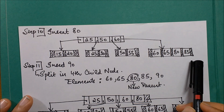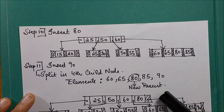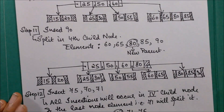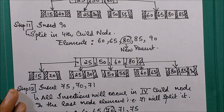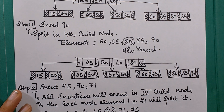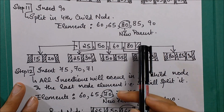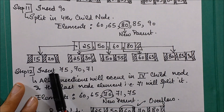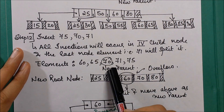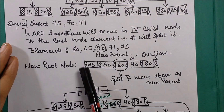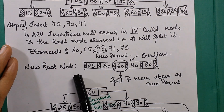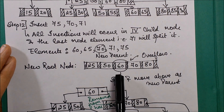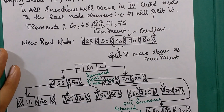Next we insert 80 in a similar manner. Slowly we keep inserting elements until the root node becomes full. When we insert the next element 70, a split occurs in the root node. 60 becomes the middle element and is moved to a higher level.